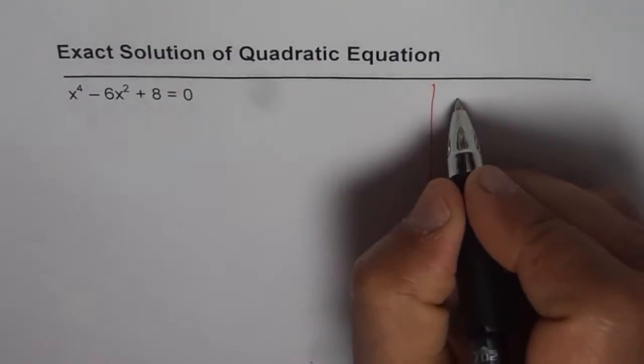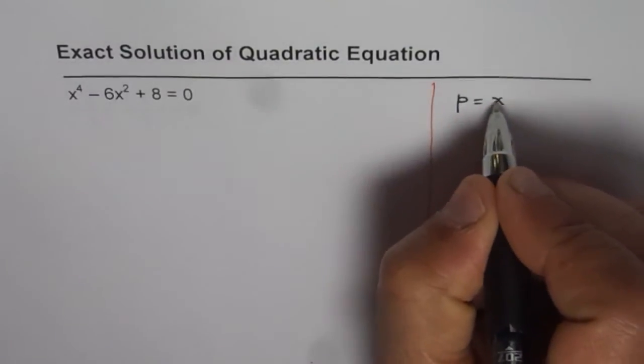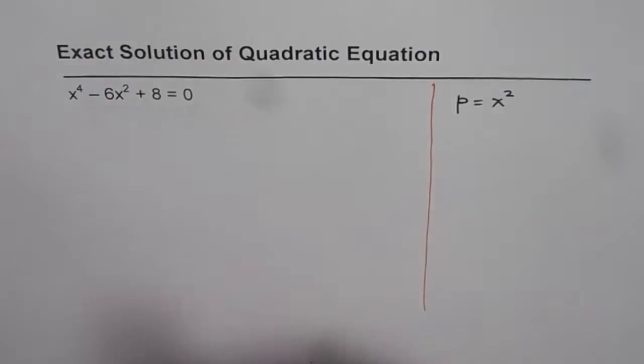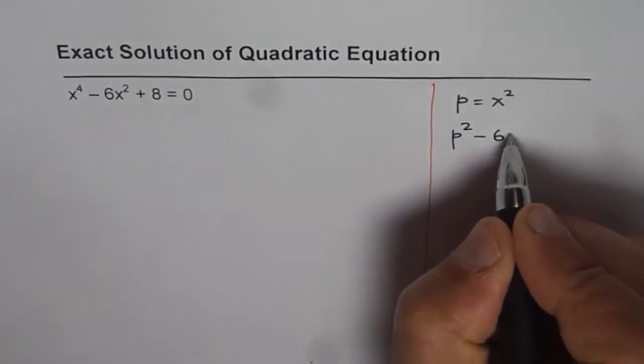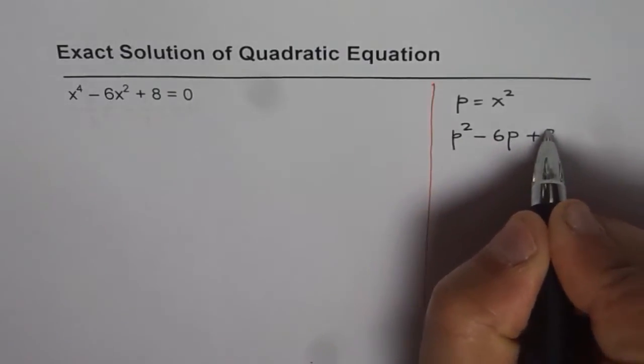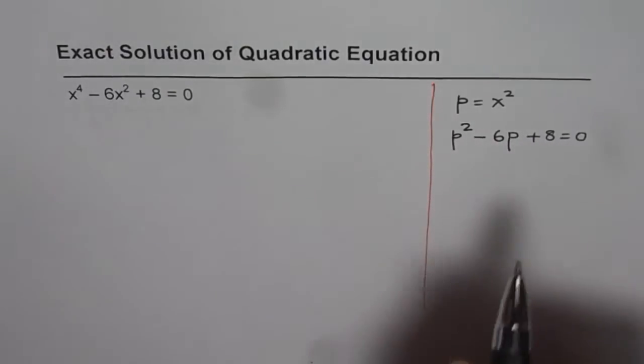That means, if I write p equals x squared, then what happens to the equation? It becomes p squared minus 6p plus 8 equals 0.